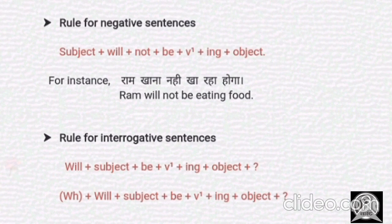Now the third part — interrogative sentences. We have to put the helping verb or auxiliary at the very beginning of the sentence. So: 'will' plus subject plus 'be' — 'be' comes after the subject — plus verb's first form plus 'ing' plus object plus question mark.